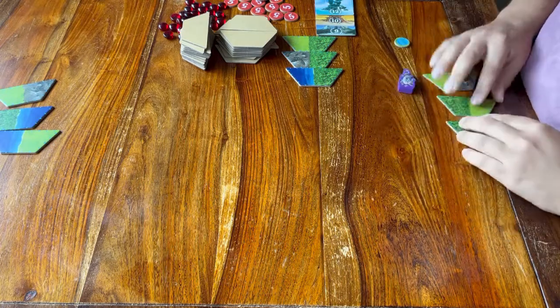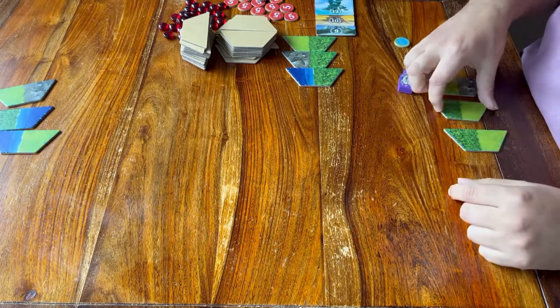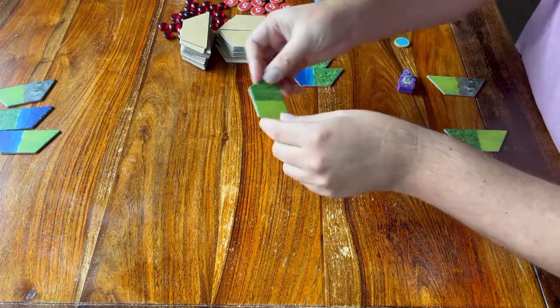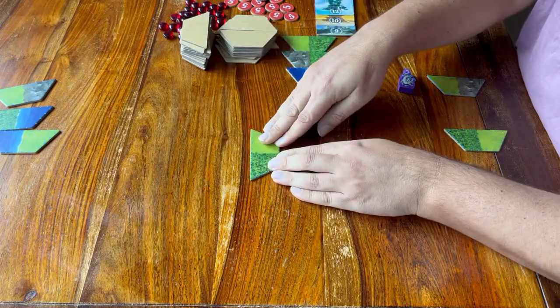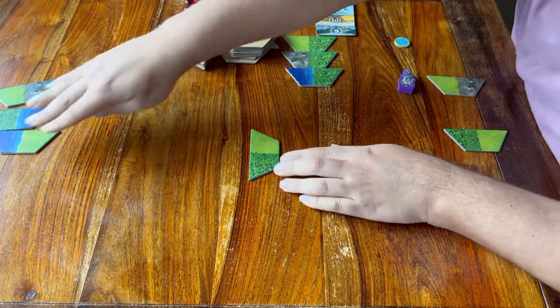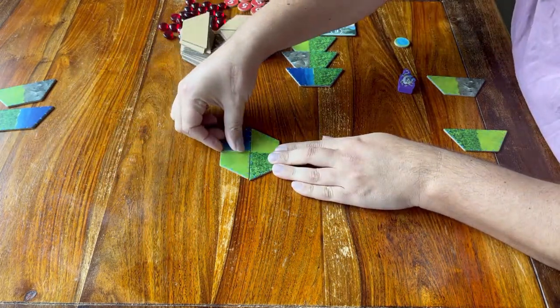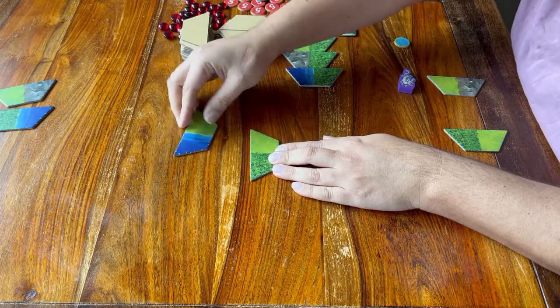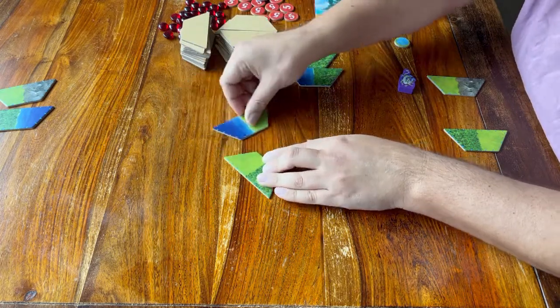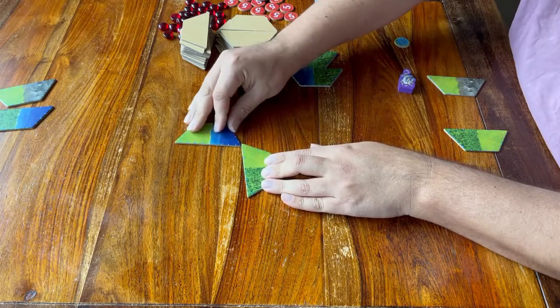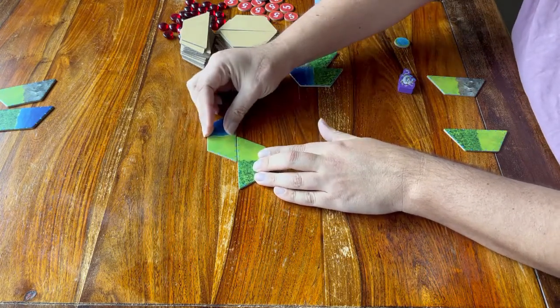Starting with me, every player adds one tile to the middle of the table to start building the world. The only rule for this is that you have to put one side fully against another side. It doesn't have to be the same side, but you can't put them together at the corners and not partially against each other.